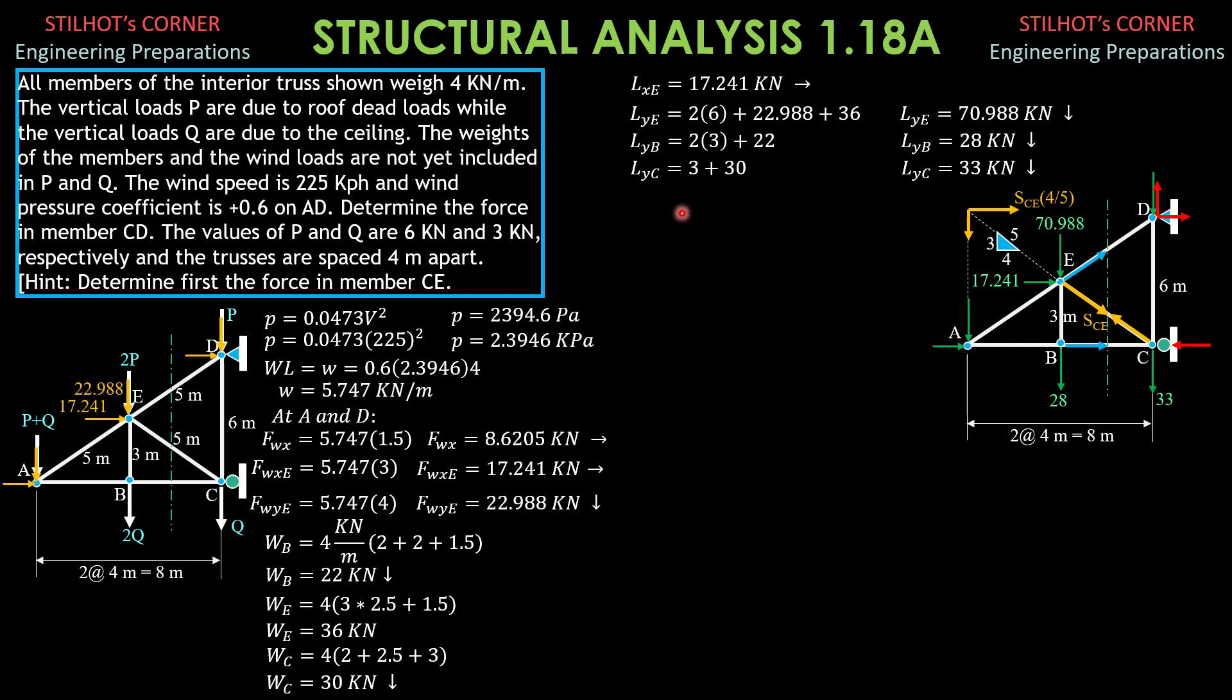Summation moment about A equals 0, clockwise positive is SCE times 4 over 5, the moment arm is 6, this is 6 meters also, that's equal to that.